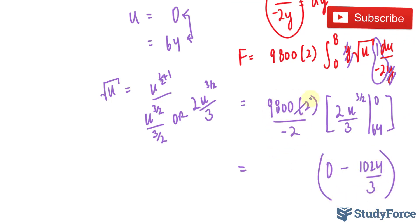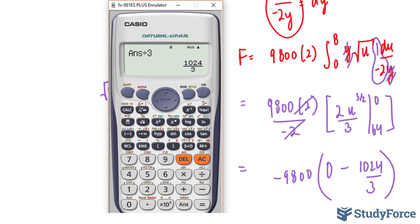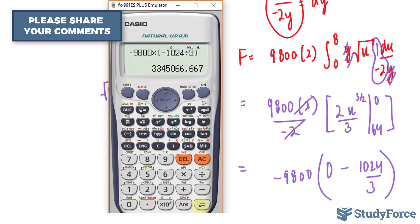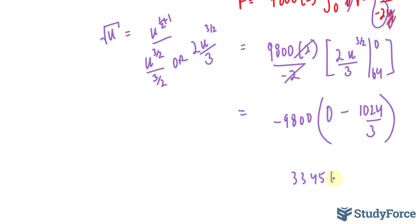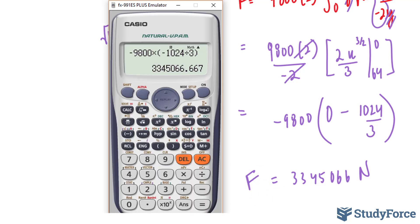I can cross these out. Negative 9,800 times negative 1024 over 3 gives us the final answer of 3,345,066 newtons. And that is my final answer.